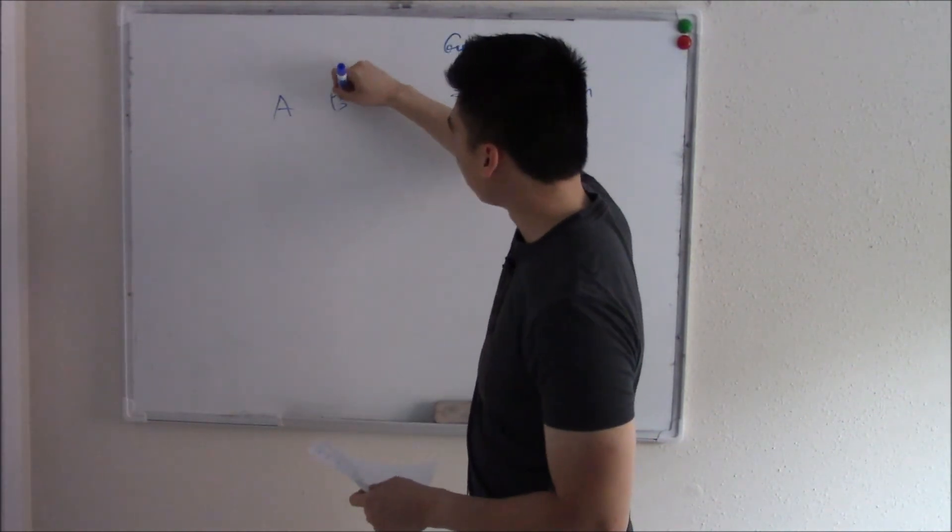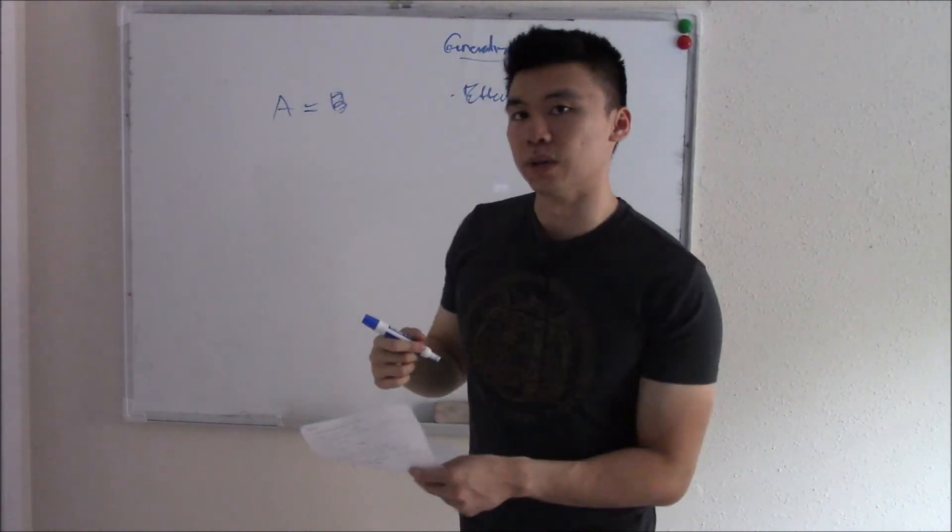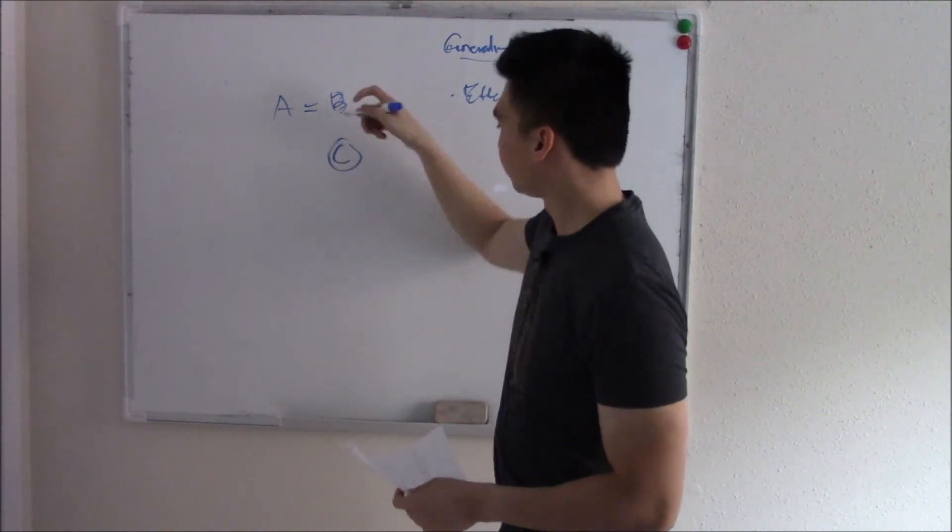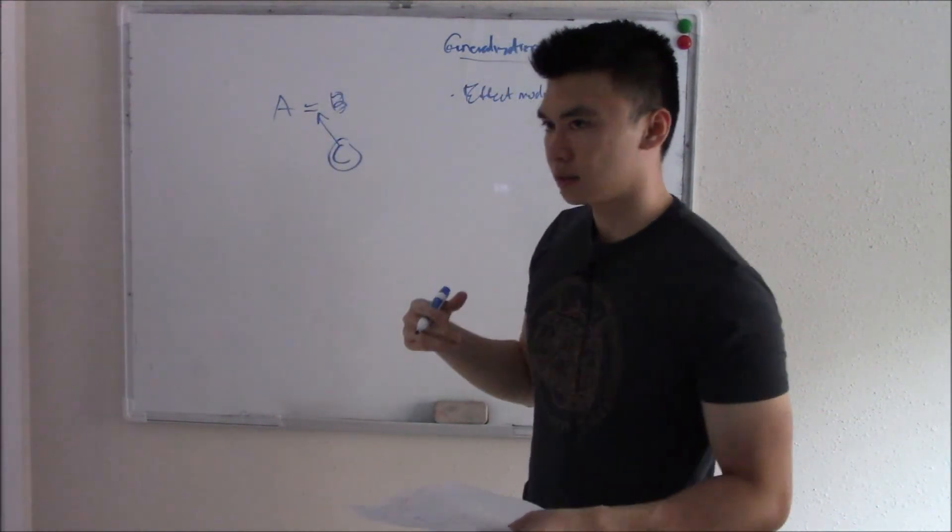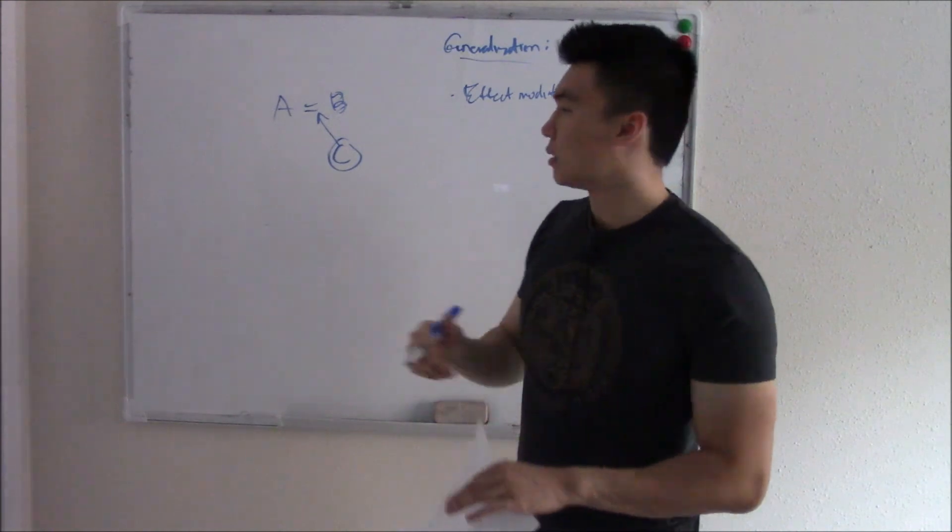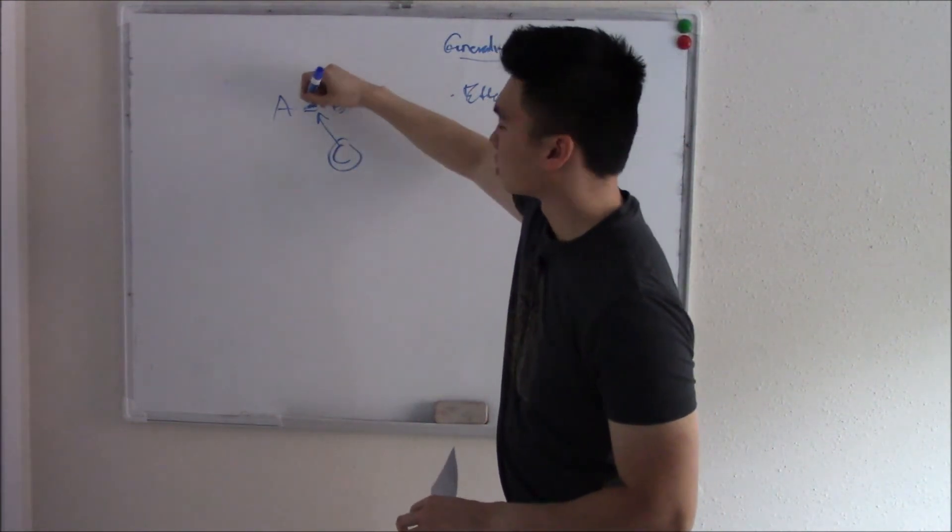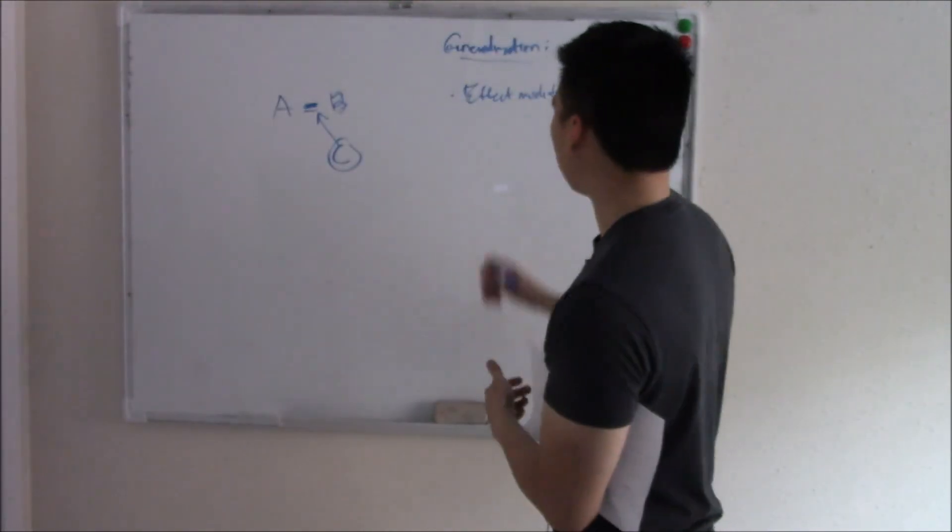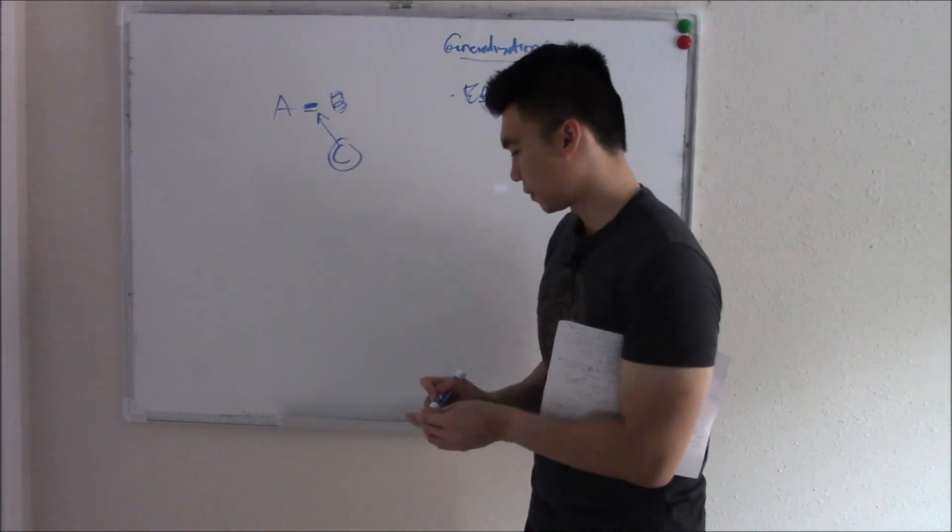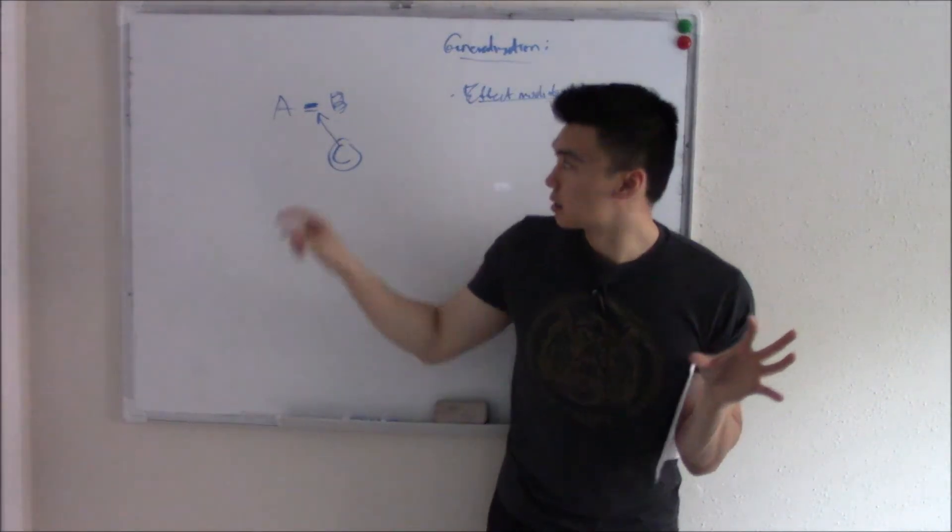Effect modification, we find that A does equal B. And that outside force may increase the risk or decrease the risk, but A equals B regardless. So an example of effect modification would be asbestos causes cancer.